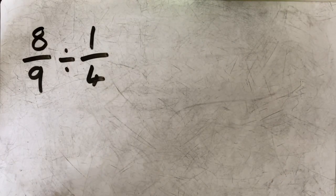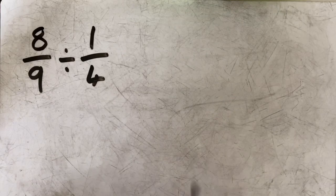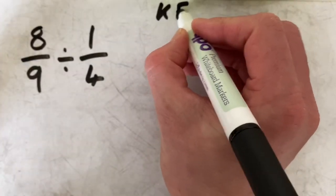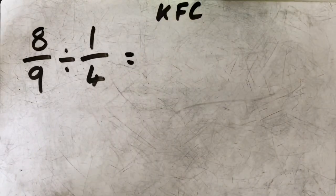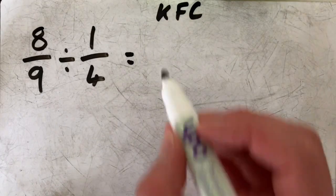We have covered dividing by fractions extensively in Year 6. The method most of us have used to learn is the KFC method. So here's how it works. K stands for keep the first fraction.